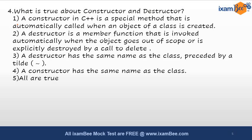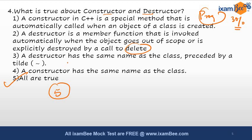The fourth question asks what is true about constructors and destructors. This is again a programming concept question worth 30% in phase one. Statement A: a constructor in C++ is a special method that is automatically called when an object of a class is created. Statement B: a destructor is a member function invoked automatically when the object goes out of scope or is explicitly destroyed by a call to delete. Statement C: the destructor has the same name as the class and is preceded by a tilde sign. Statement D: a constructor has the same name as the class. All of these are true, so answer 5 — all are correct — is the answer.